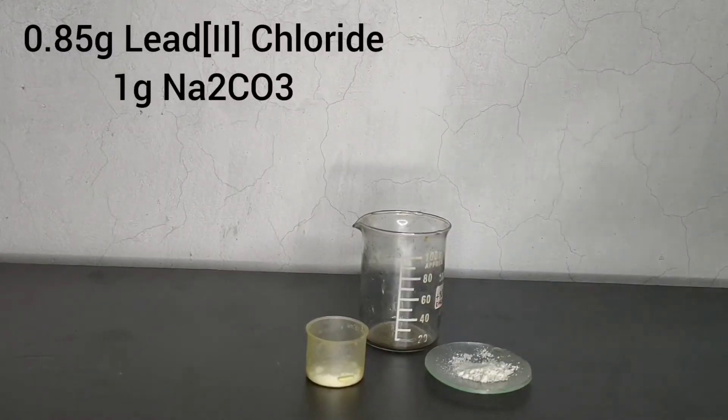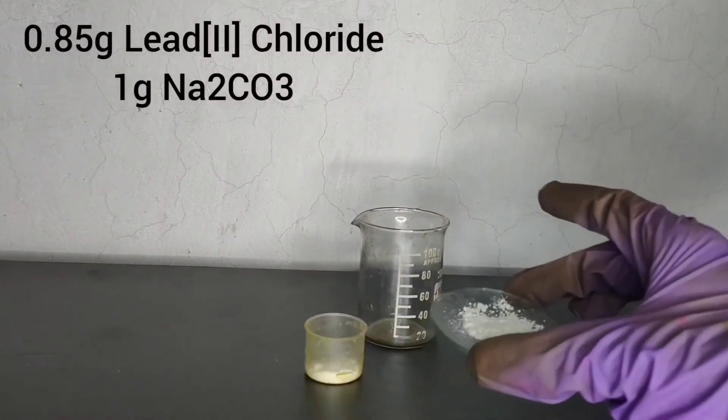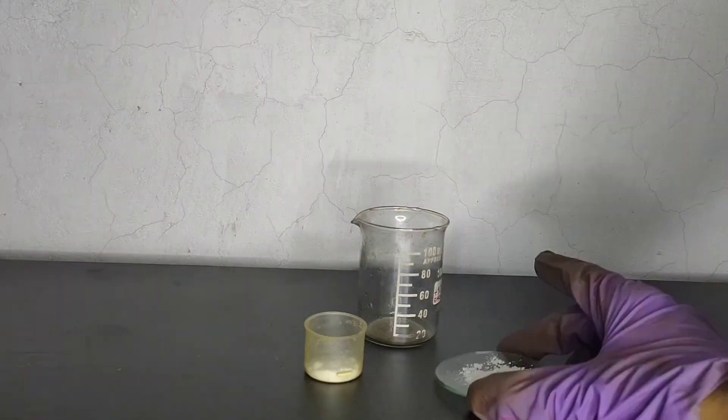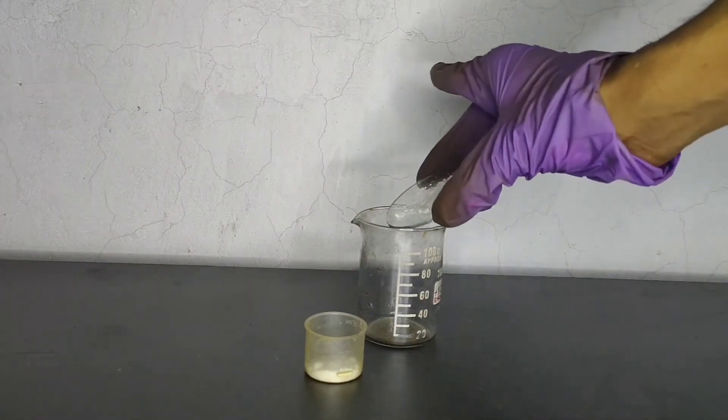In this video I will be making some lead(II) acetate from previously prepared lead(II) chloride. Over here I have 0.85 grams of lead(II) chloride and 1 gram of sodium carbonate, also known as washing soda.